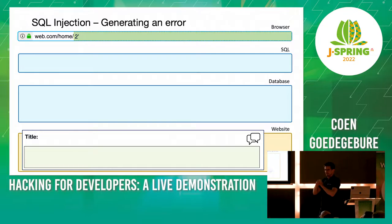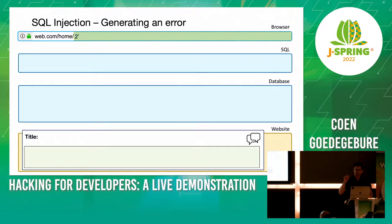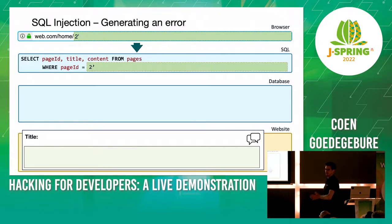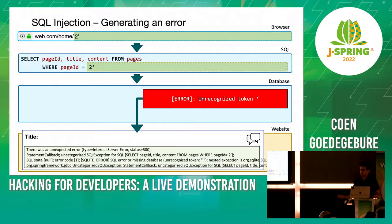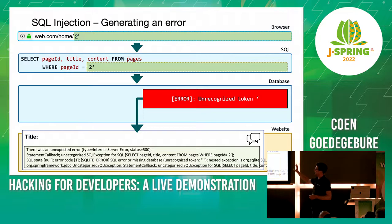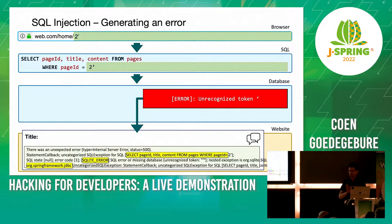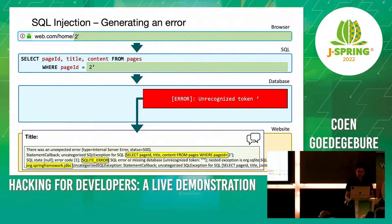Now we start generating an error — that's the number one thing you want to do as an attacker. Let's see if I can make the website do something it was not designed to. I insert an apostrophe. This is syntactically incorrect SQL, so it will generate an error. The DBMS outputs an error message. If the error is just blatantly put back to the website, it gives a lot of information — I now know it's using SQLite and the Spring framework. That's a lot of information as a hacker.